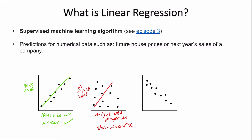Let's say we take a sample of people and record their IQ, plotting it against the time taken to solve a puzzle. This could also be considered linear because we can draw a line that seems to capture the general relationship. Again, this will be an appropriate dataset to apply linear regression to.